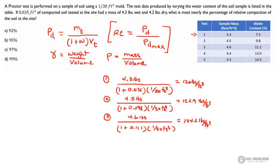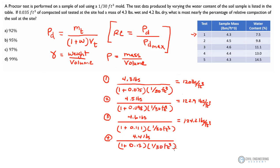Going right on down the line, for test four we have 4.4 pounds divided by 1 plus 0.13 — we've got 13% water content on that one — all times by 1/30th of a cubic foot. So for test number four we should come out with 116.8 pounds per cubic foot.